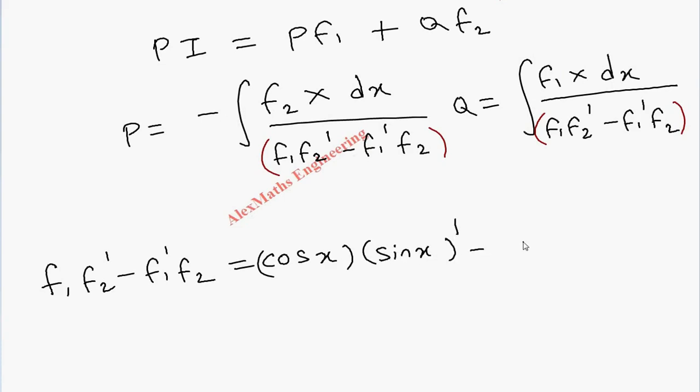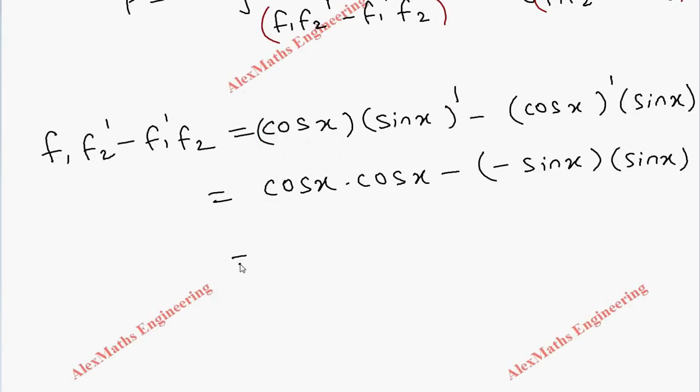Cos x times cos x, minus the derivative of cos x which is -sin x, times sin x. The first term is cos²x, then plus sin²x, which equals 1.